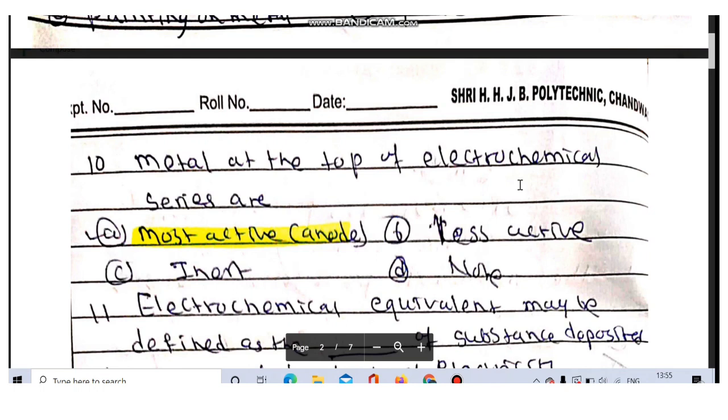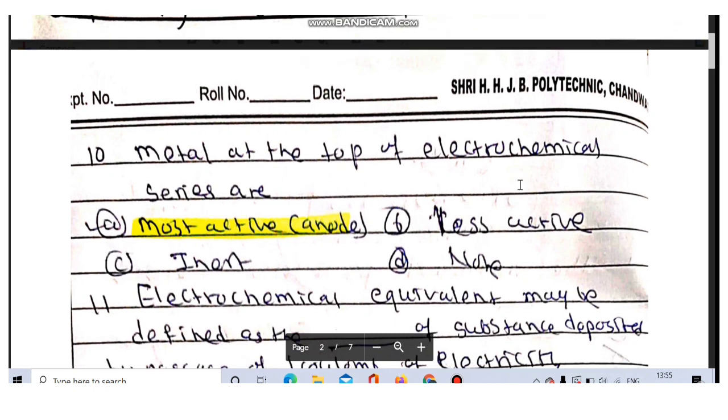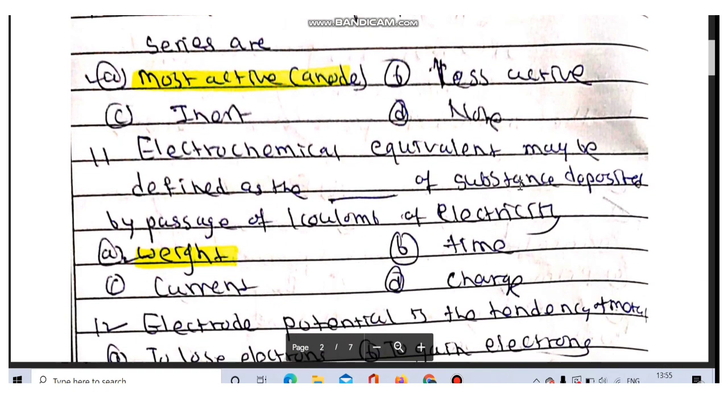Question number 10 is metal at the top of electrochemical series. These are the most active metals, they are also known as anodic type. Electrochemical equivalent may be defined as the weight of substance deposited by passage of one coulomb of electricity.